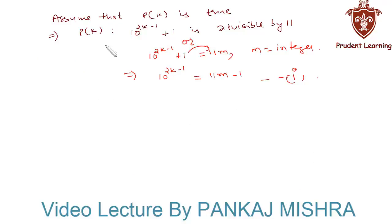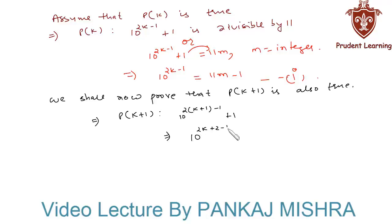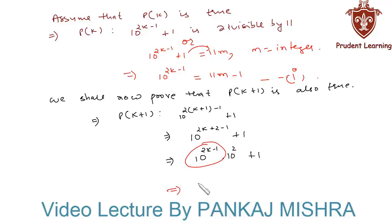In our final step, we shall prove that P(k+1) is also true. P(k+1) equals 10 raised to the power (2k plus 2 minus 1) plus 1, which can be written as 10 raised to the power (2k minus 1) multiplied by 10 squared, plus 1. We substitute the value of 10 to the power (2k minus 1) from equation 1, giving us (11m minus 1) × 100 plus 1.